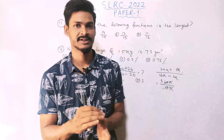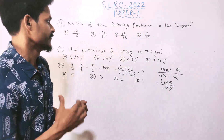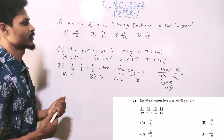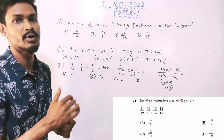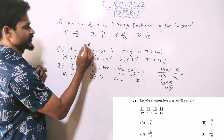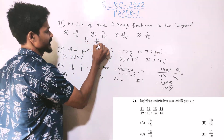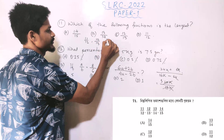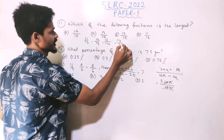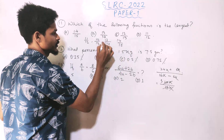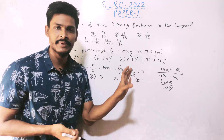The first question is: which of the following fractions is the largest? The fractions given are 11 by 12, 12 by 13, 13 by 14, and 14 by 15.